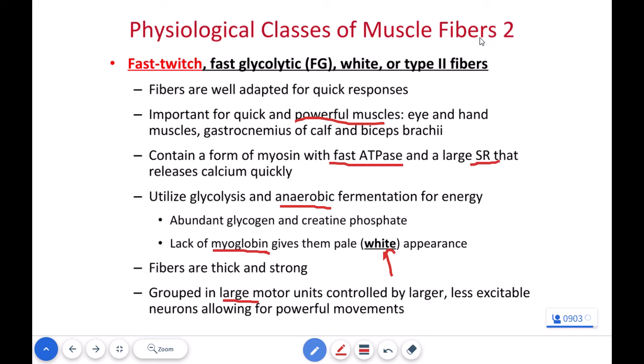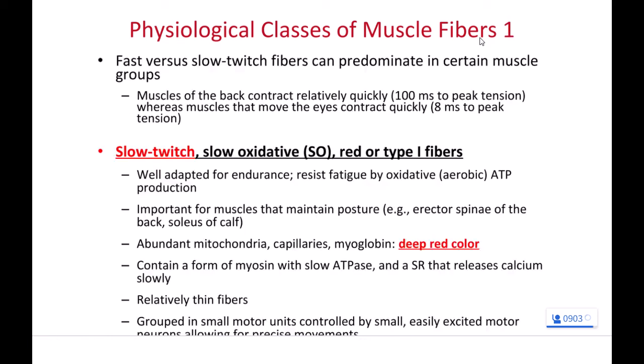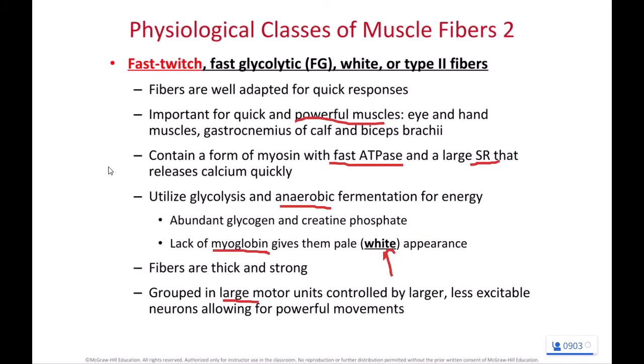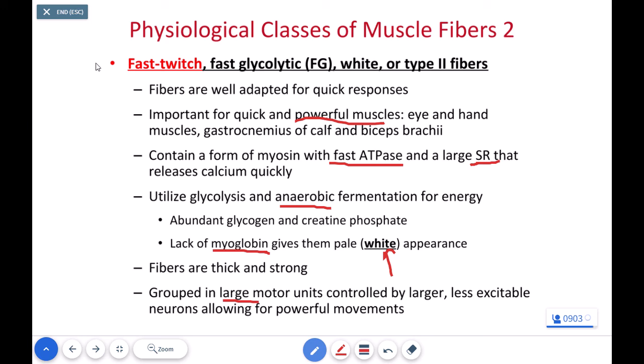A good example of a smaller motor unit in a slow twitch oxidative fiber is the orbicularis oris, the muscle that goes around your lips. You can contract your lips for a very long time and you have very small motor units associated with your lips. Classic examples of large fast twitch muscles would be the gastrocnemius or the gluteus maximus.